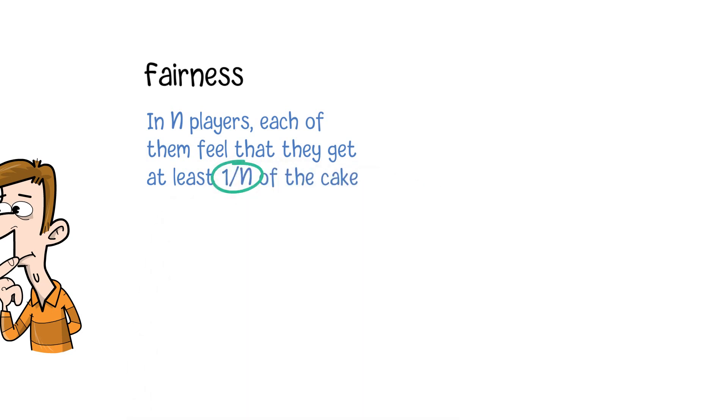You may wonder why each of them will get no less than 1 over N but the total is 1. This 1 over N is a subjective interpretation from an individual player instead of the physical size.